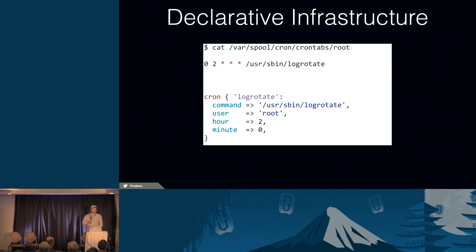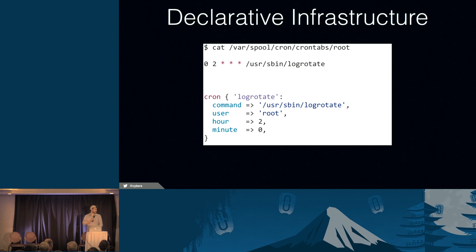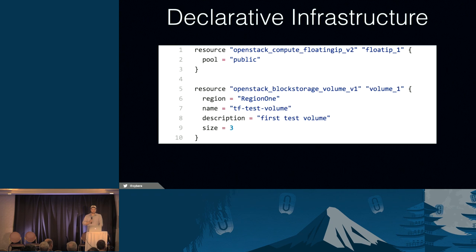When I mention declarative infrastructure, the first example is just reading a crontab file. The output has a structured data form, and if you're not familiar with crontab format, you wouldn't know what the specific fields mean. The second example is from Puppet. If you're familiar with Puppet's declarative language, it's more readable. The second part of declarative infrastructure is that you don't need to know the backend implementation — you just declare it. Terraform takes a similar approach; its declarative language looks pretty similar to Puppet.